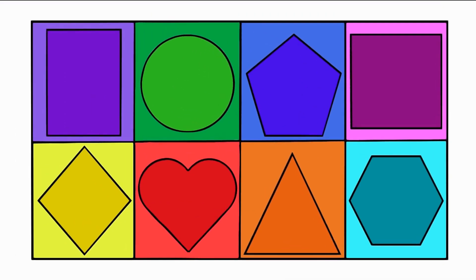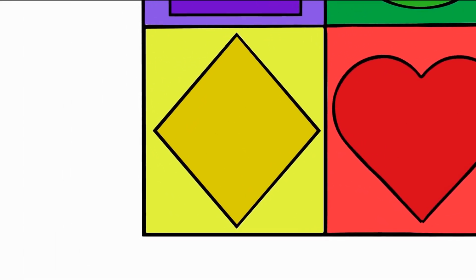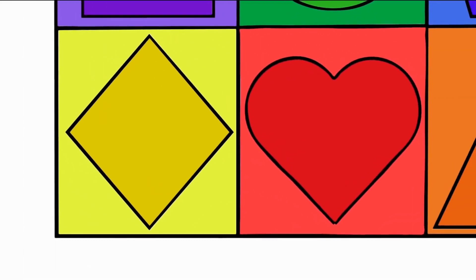There are 8 shapes and 8 different colors: purple rectangle, green circle, blue pentagon, pink square, yellow diamond, red heart, orange triangle, and blue hexagon.